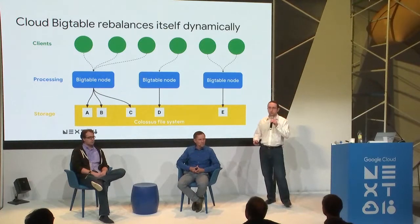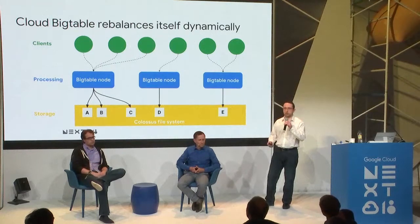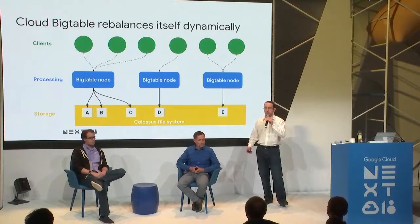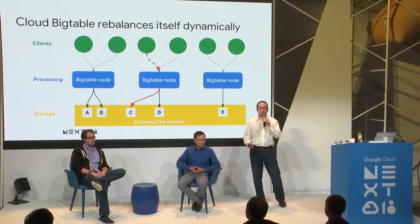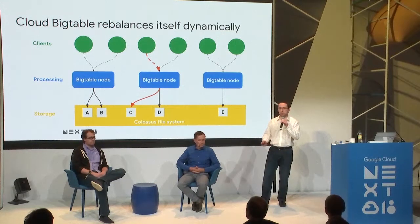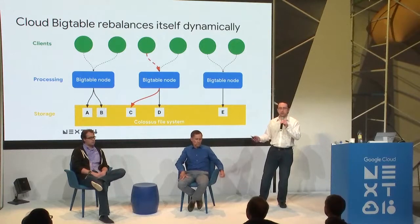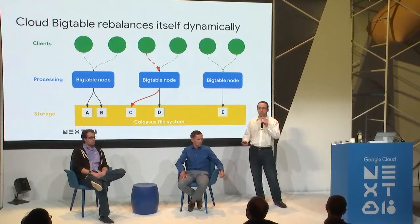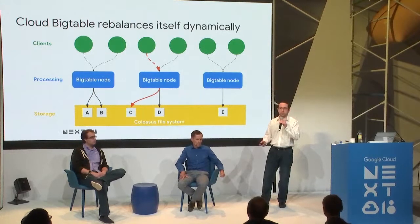Nodes don't talk to each other, so there are no cross-row transactions, but this allows very quick scalability. The keys A, B, C, D, and E represent sorted key ranges within a single table. If one node gets heavy activity from popular data, Bigtable can simply reassign ownership to a different node — an online operation with no data motion. Regardless of gigabytes or terabytes reassigned, this is just a metadata update; the data stays in Colossus. Clients are completely unaware because requests are automatically forwarded by the load balancing proxy layer.